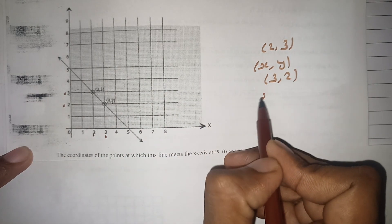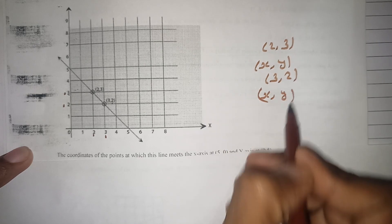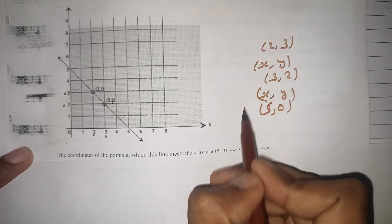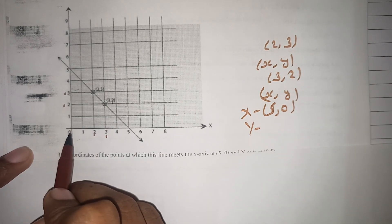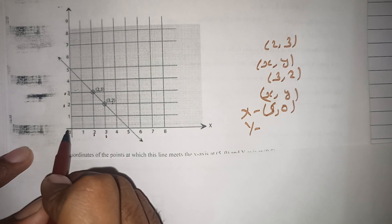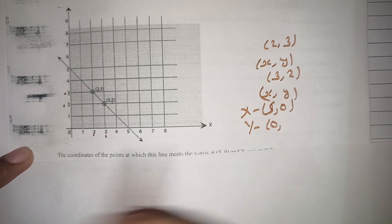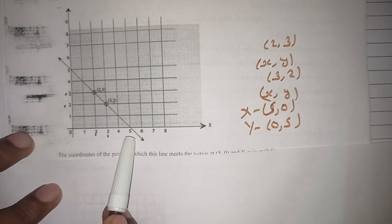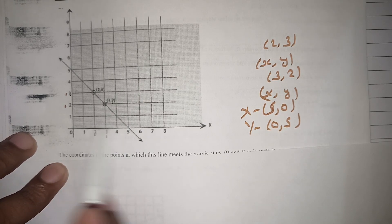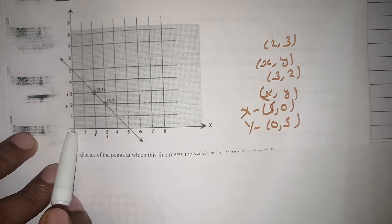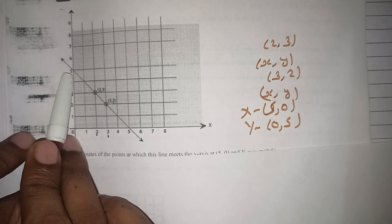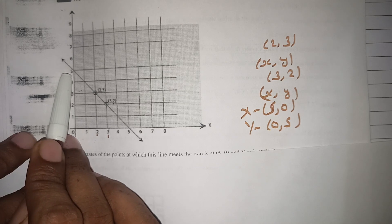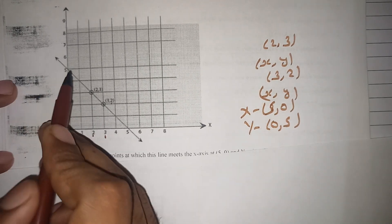Now for the x-axis intercept, x is 5 and y is 0, so the point is (5,0). For the y-axis intercept, y is 5 and x is 0, so the point is (0,5).